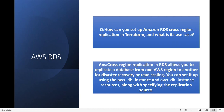Next question: how can you set up AWS RDS cross-region replication in Terraform and what is the use case? Cross-region replication in RDS allows you to replicate a database from one AWS region to another for disaster recovery and read scaling. You can set this up using the aws_db_instance resource along with specifying the replication source.